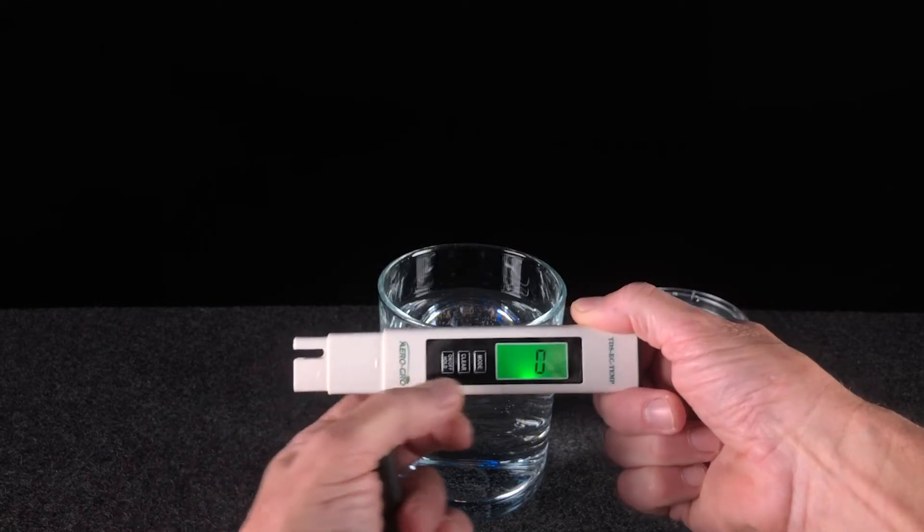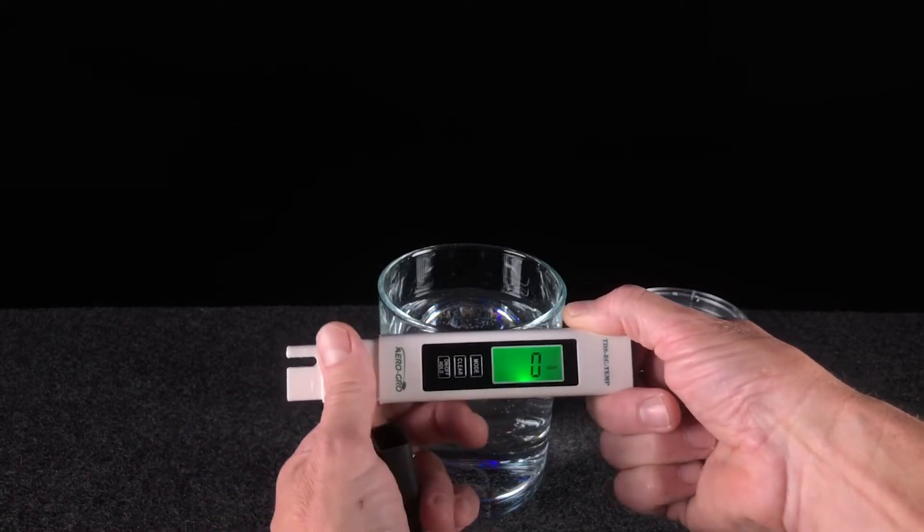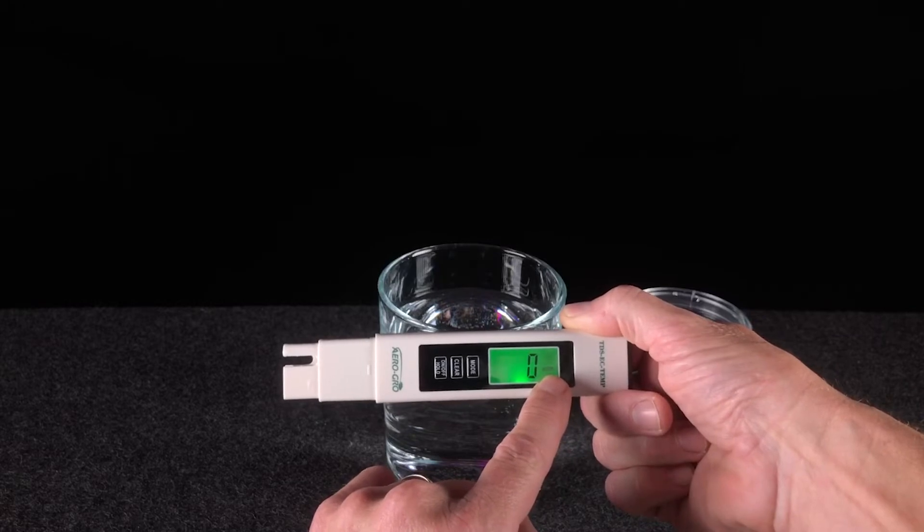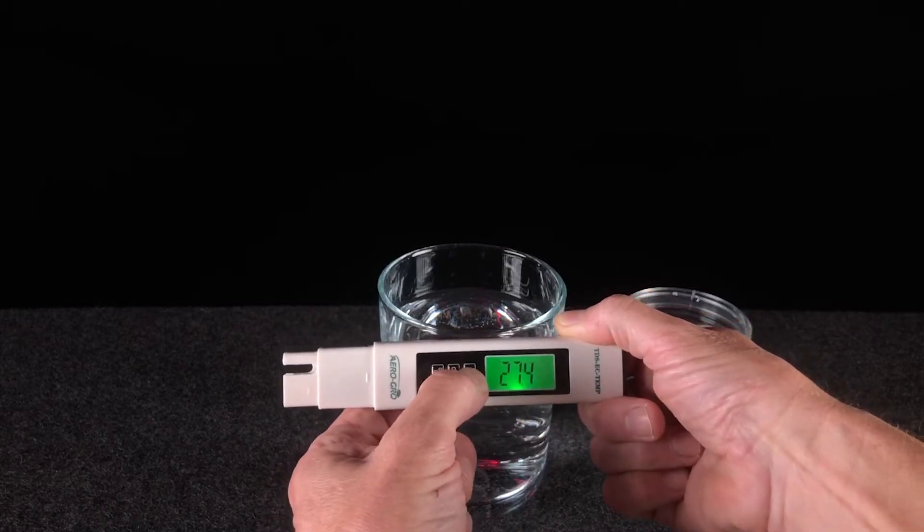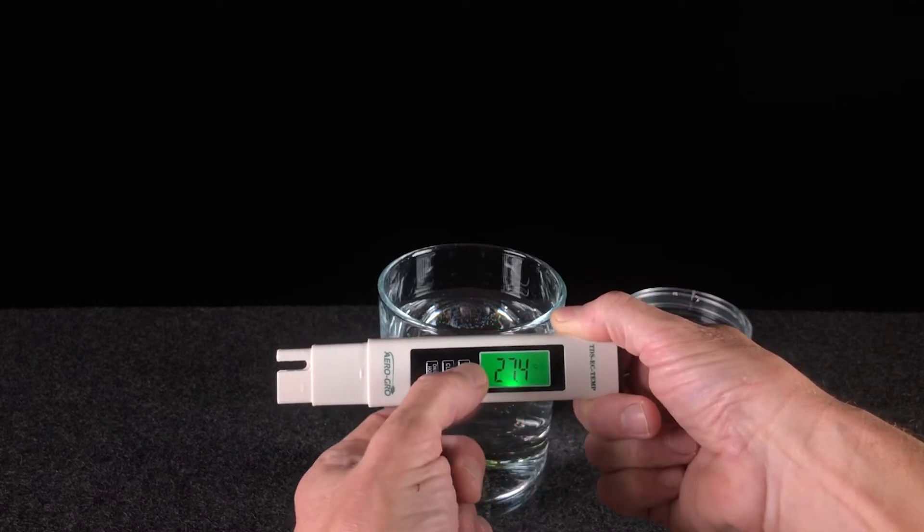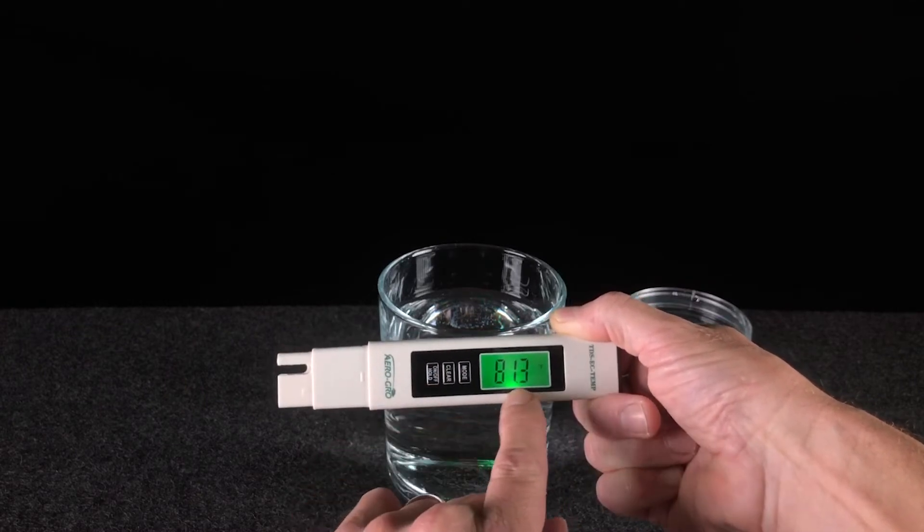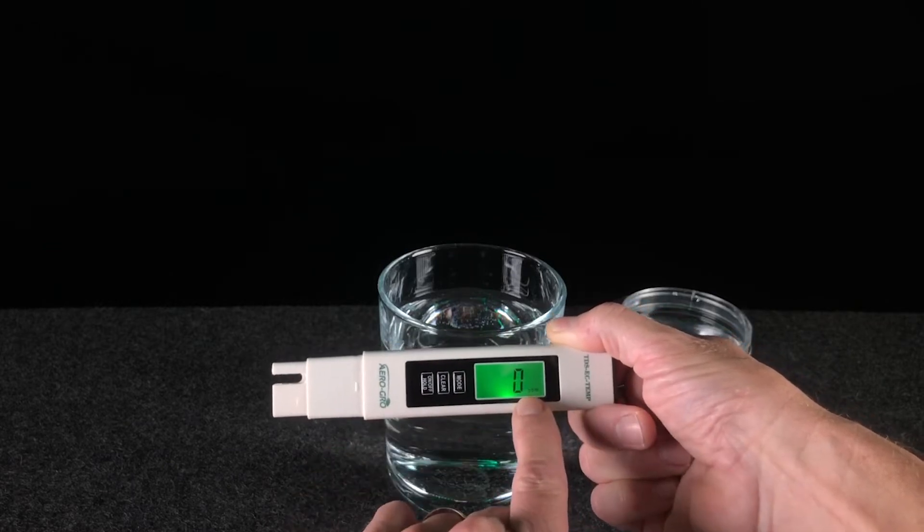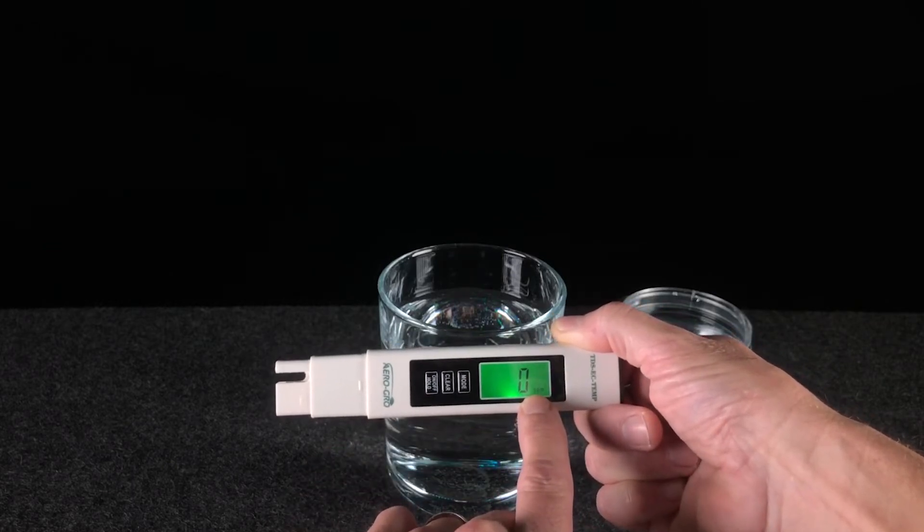If we click this mode button again, we would now be in EC mode, which is measured in microsiemens per centimeter. Click that mode button again, we are in temperature mode, measured in Celsius. Click it again, we're in temperature mode measuring Fahrenheit. And one more time brings us back to TDS, measured in parts per million.